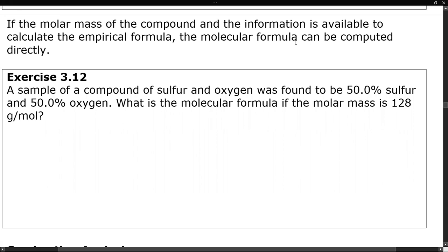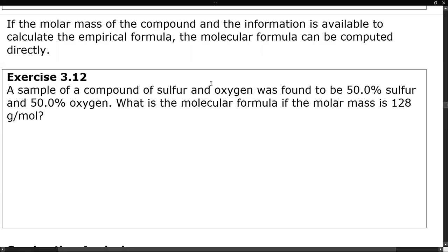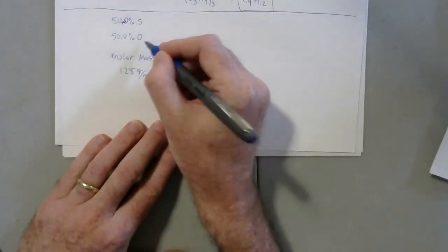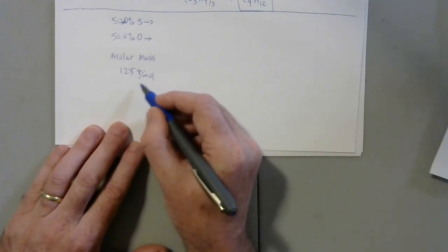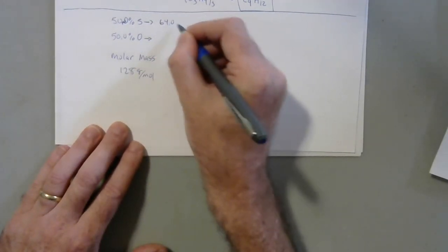If we have the molar mass of the compound, we can go straight for the molecular formula if we have percentage composition and molar mass data — sometimes in more advanced courses this method is used because it's a little faster. If you've got a sample of a compound between sulfur and oxygen found to have 50% sulfur and 50% oxygen, and the molar mass is 128 grams per mole, the wrinkle is that instead of assuming a 100 gram sample, we're going to assume a 128 gram sample. So that gives us 64.0 grams of sulfur and 64.0 grams of oxygen.